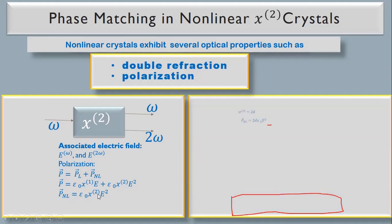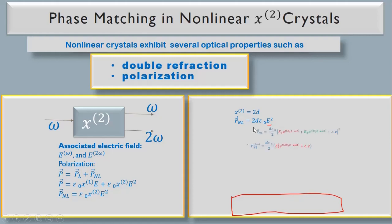In antenna theory, electrical engineering, optics, and photonics courses, the convention is χ²=2d, and we will use that here. So the nonlinear polarization equals 2d·ε₀·E, where E is the sum of the electric fields associated with the output at ω and 2ω frequencies.